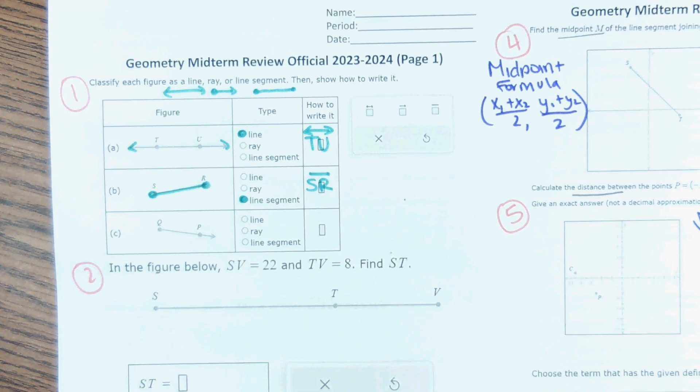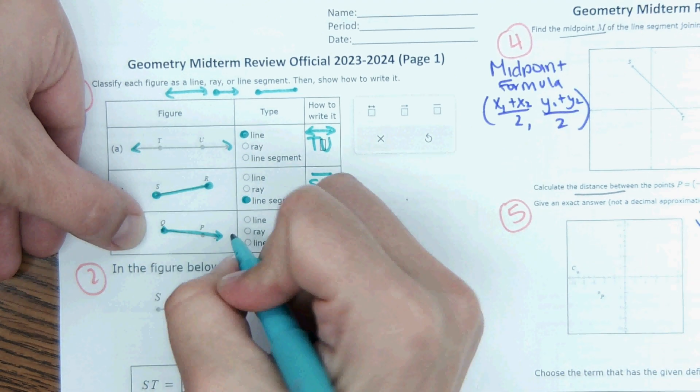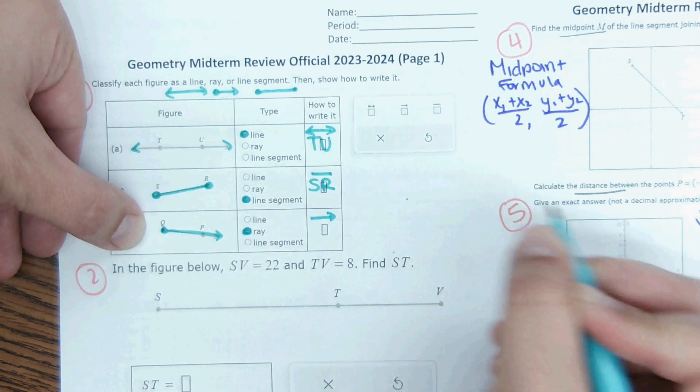And then see, this here is a ray. It has an endpoint and goes on in one direction. The symbol for that would look like this.